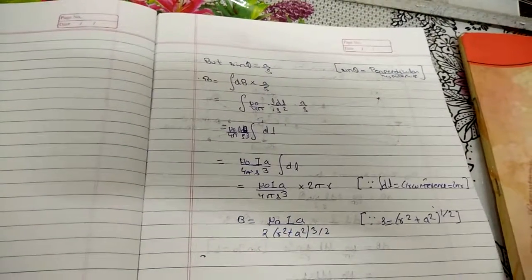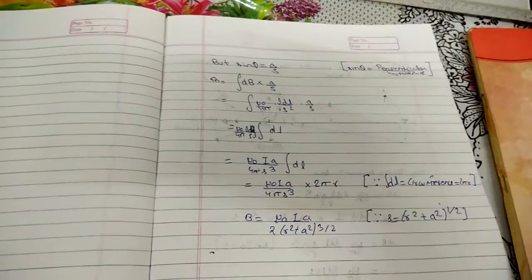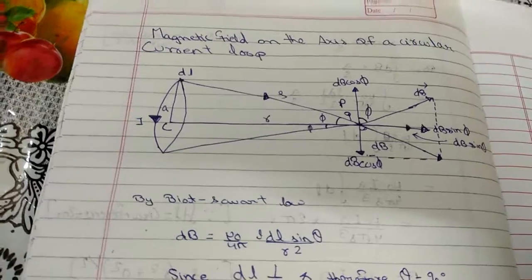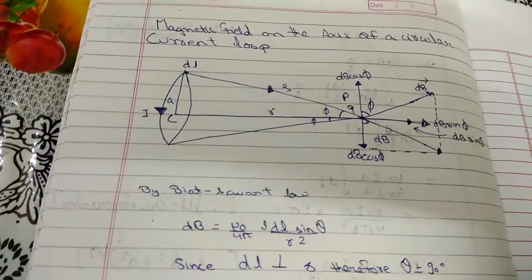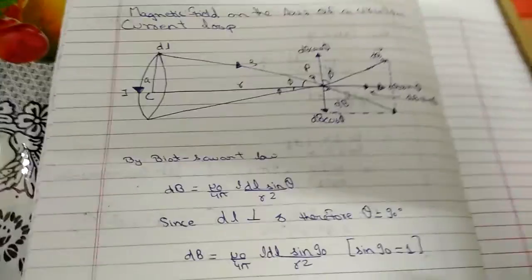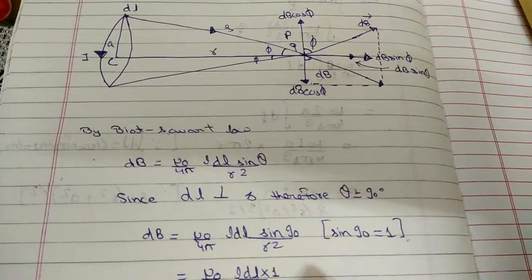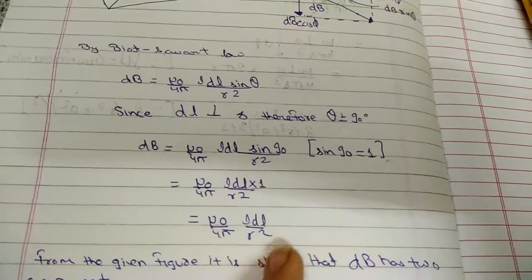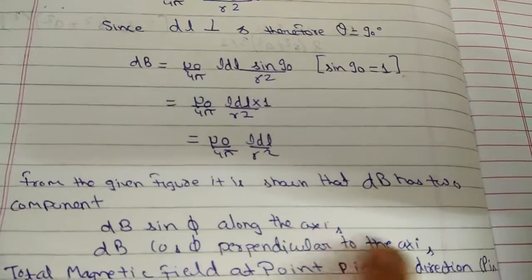That is all for the magnetic field on the axis of a circular current loop. To recap: by Biot-Savart law, we put in the value of dB, and since dl is perpendicular to s, theta is 90 degrees. So dB is equal to mu0 idl sin 90 upon 4 pi r squared, and since sin 90 equals 1, we get mu0 idl upon 4 pi r squared. From the figure, dB has two components: dB sin phi along the axis and dB cos phi perpendicular to the axis.